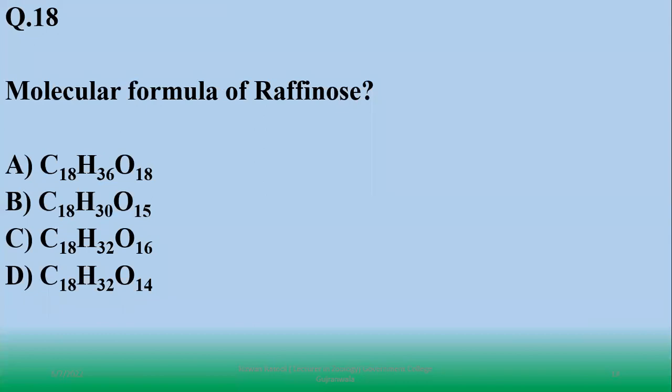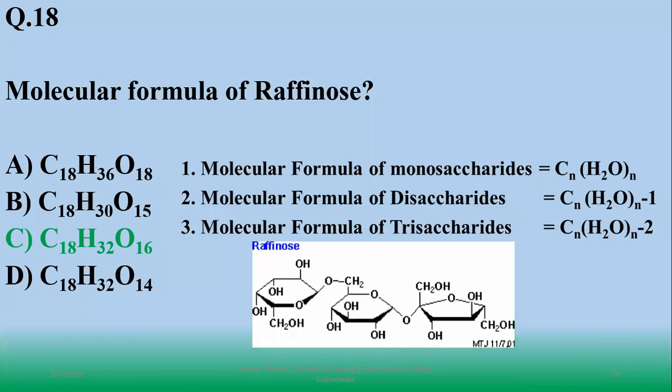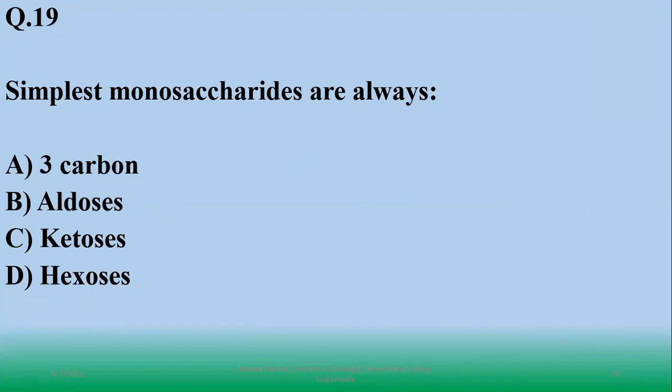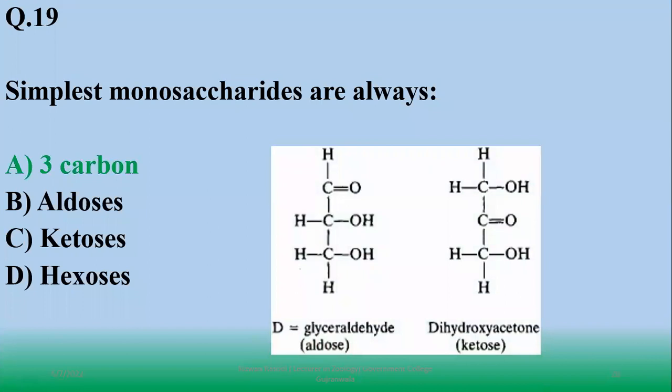Molecular formula of raffinose - raffinose you know is a trisaccharide: glucose, galactose, fructose. It's a trisaccharide with three hexoses. Carbon is 18, hydrogen is minus total three hexoses, and oxygen we have to minus two water molecules. So right option is C. Raffinose has three monomers. Number 19: simplest monosaccharides - they are always having three carbon atoms but they may be aldo or keto sugars and they are never hexoses, like dihydroxyacetone and glyceraldehyde.